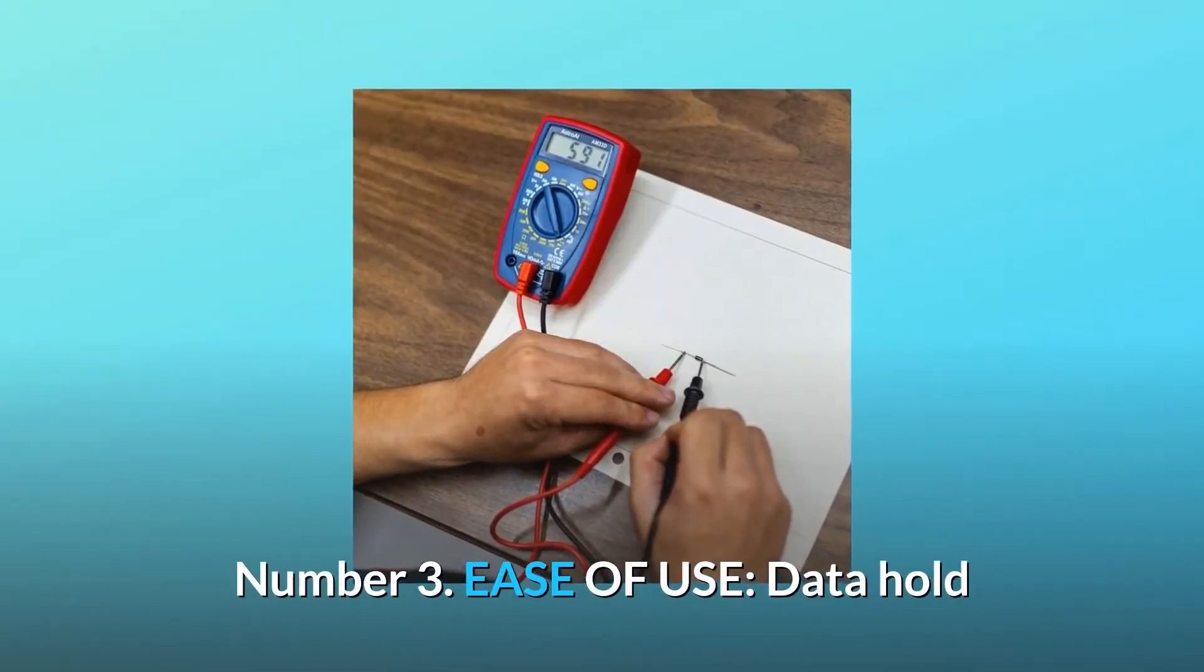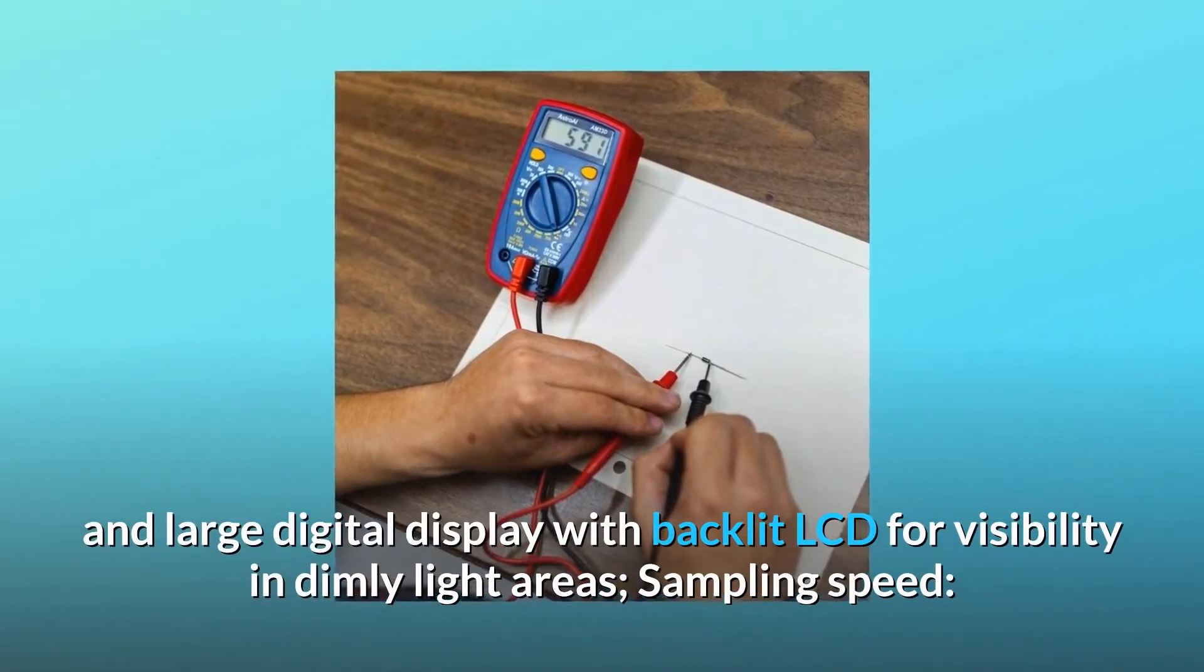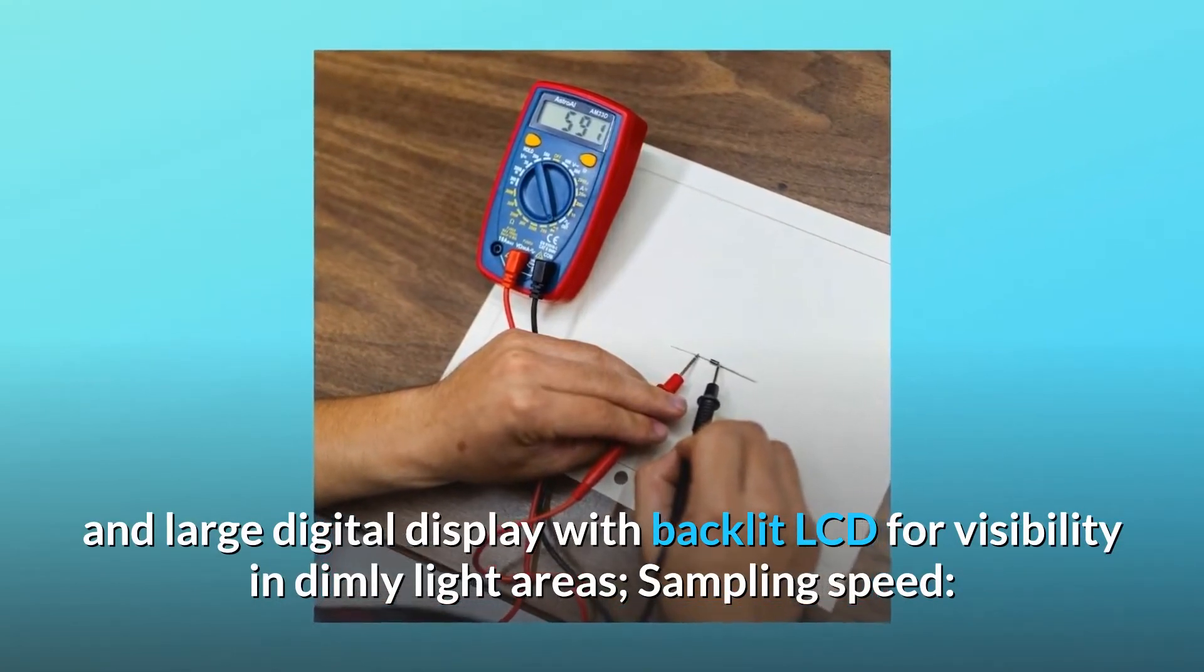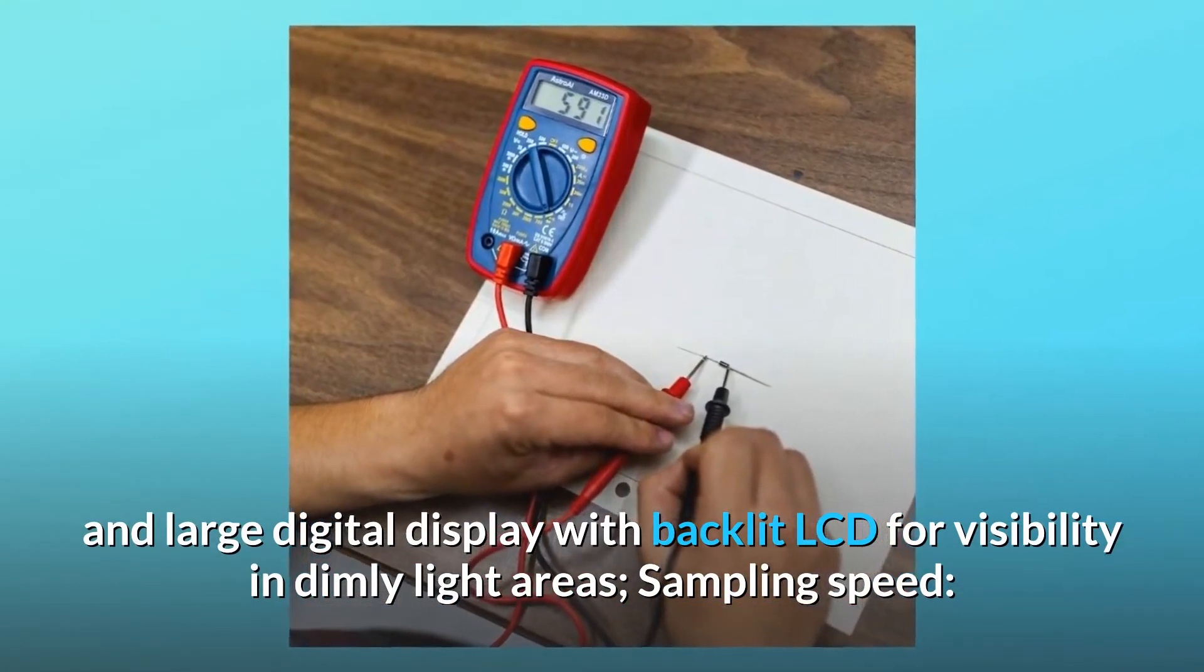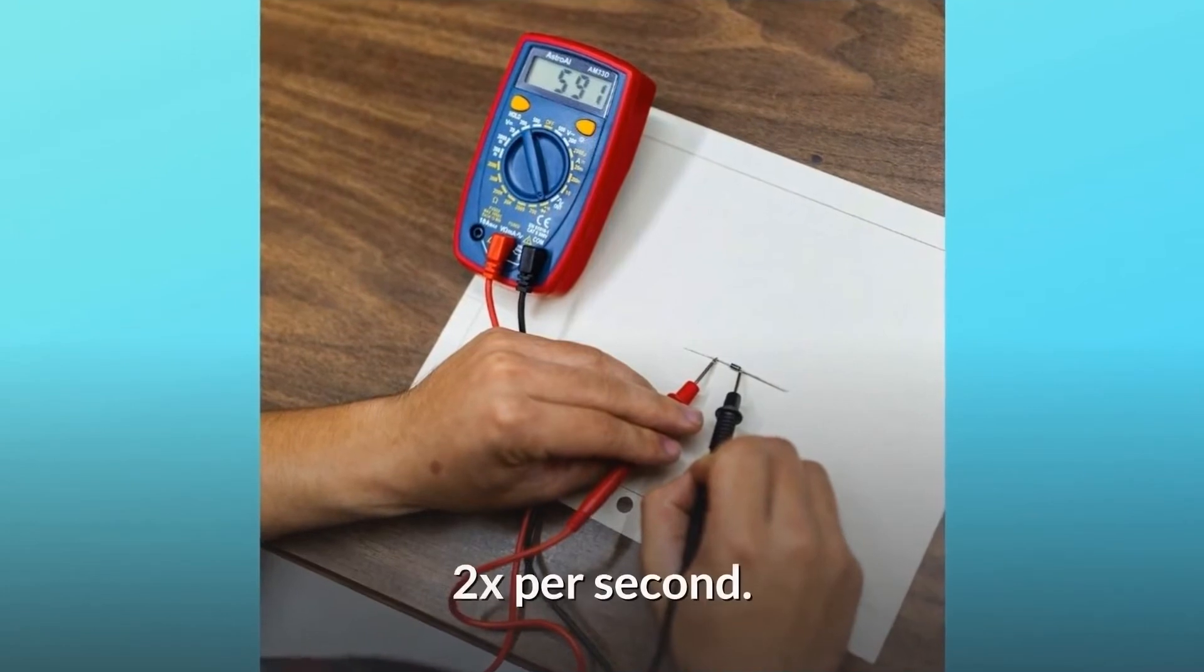Number 3: Ease of use. Data hold, enlarged digital display with backlit LCD for visibility in dimly lit areas. Sampling speed: 2 times per second.